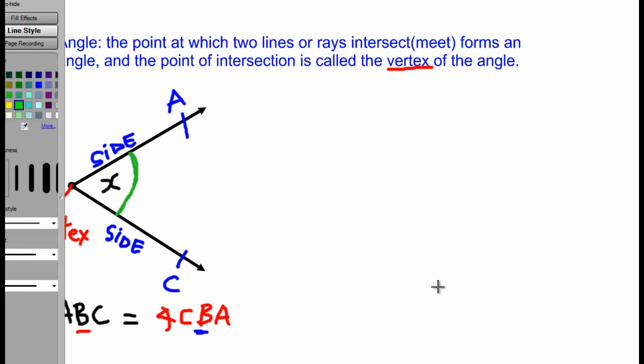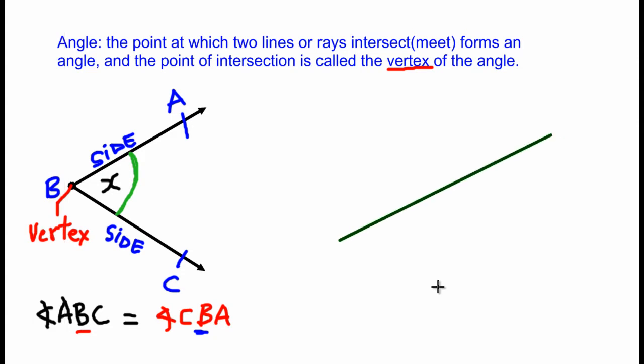Let me just change this color quickly. So let's say I had a green line running in that direction, and let's say I had a red line running in that direction.